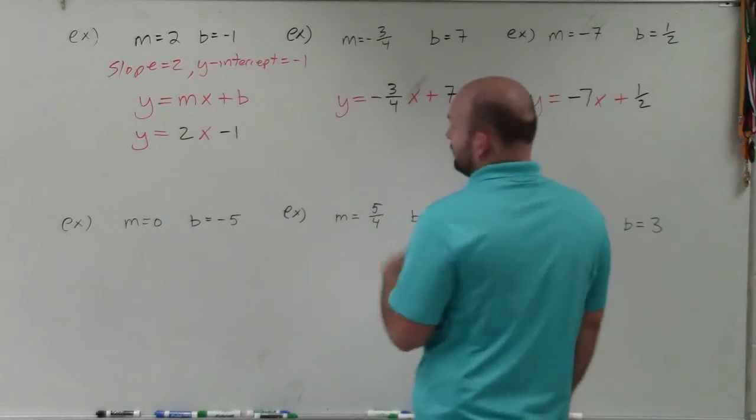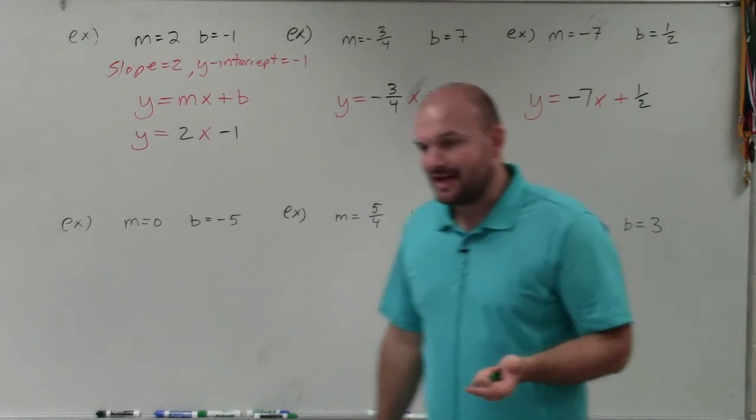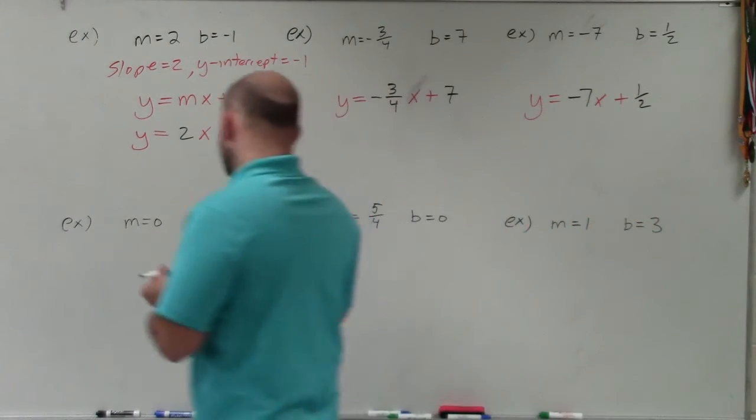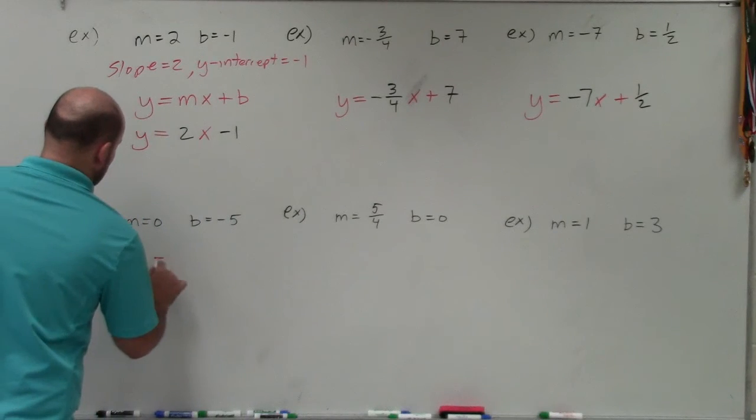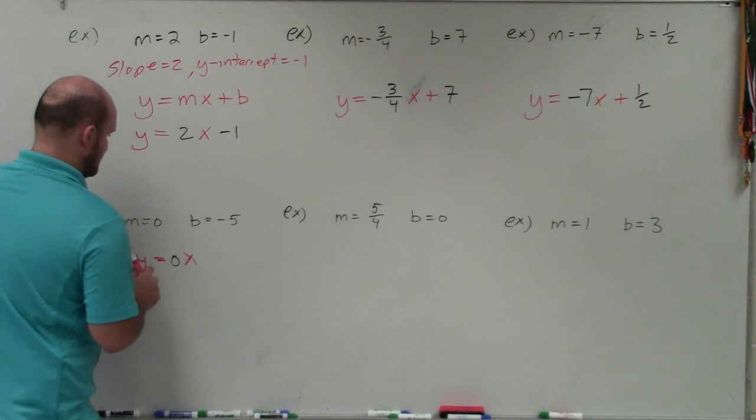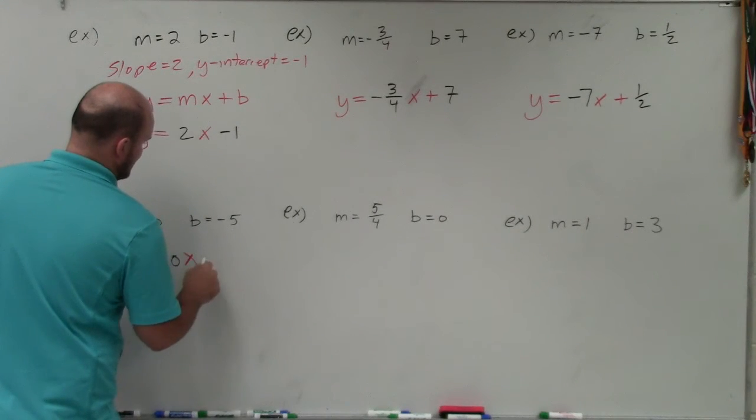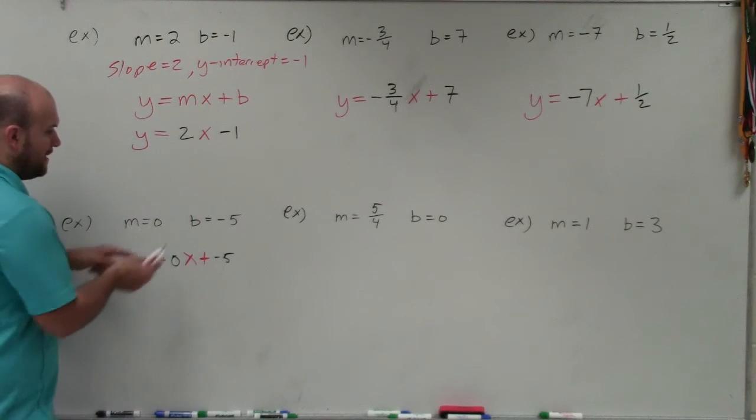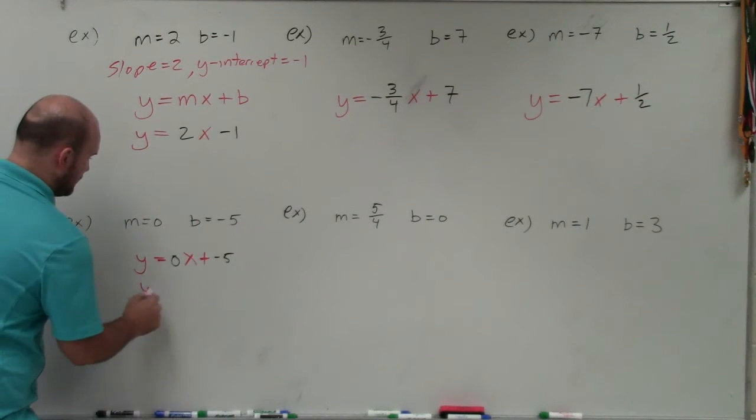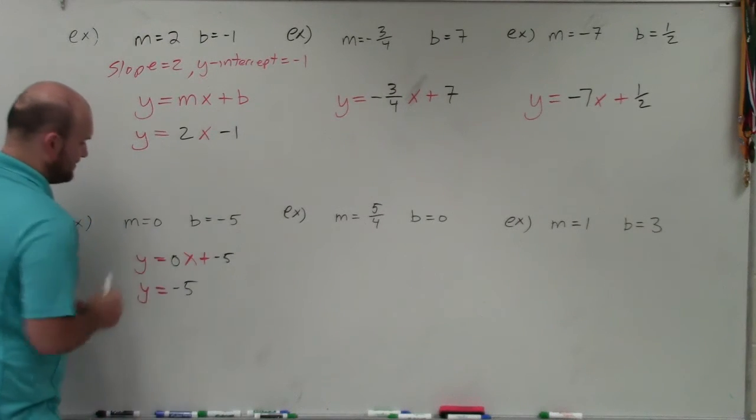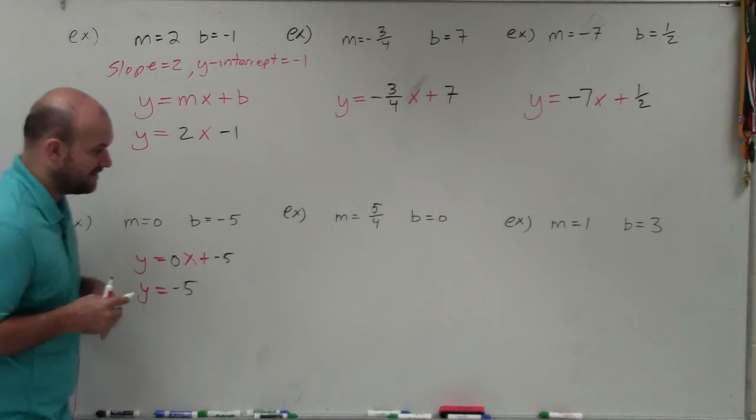Then there's a couple other ones where, what about when m equals 0, when we have values that equal 0? Well, again, plug them in just like you would. So y equals 0x minus 5. Really, it's plus a negative 5. However, 0 times x is going to be 0. So it's y equals, and then plus a negative 5 is really just minus 5. So we can simplify it as y equals negative 5.